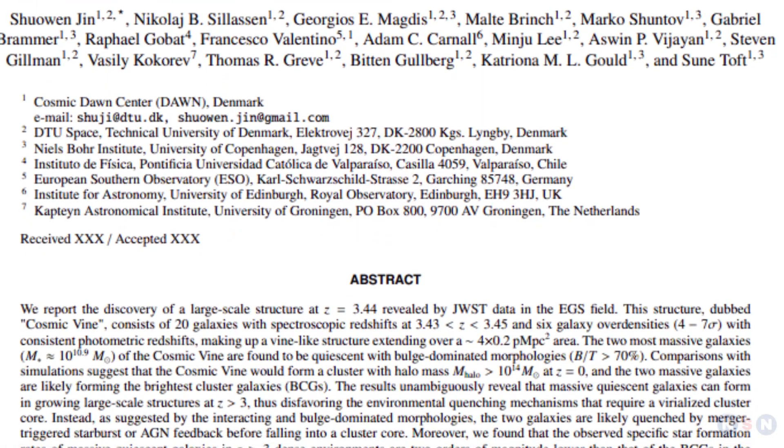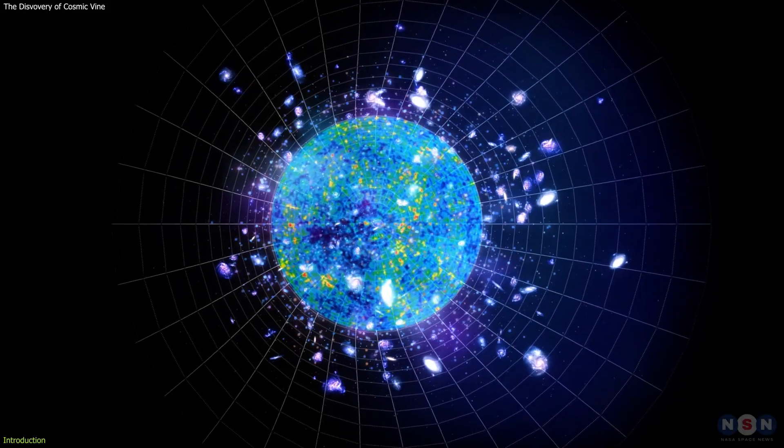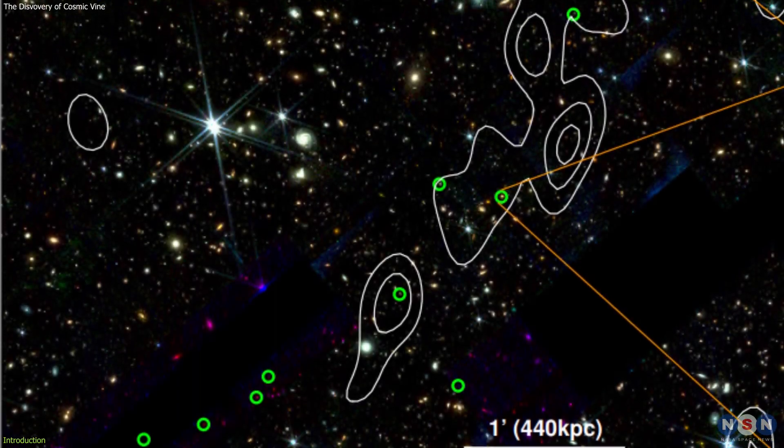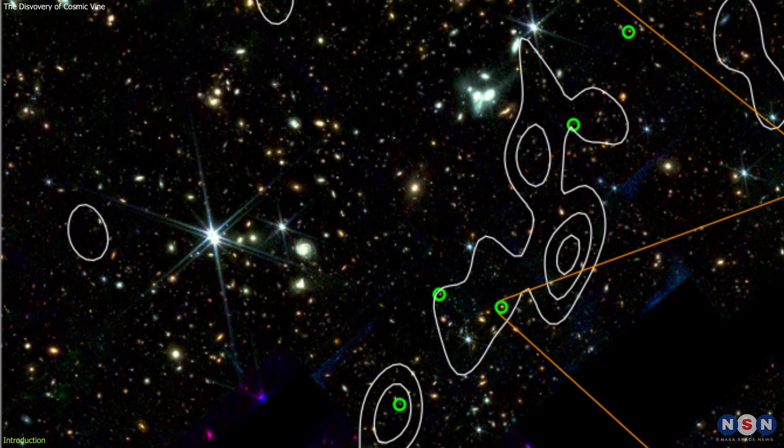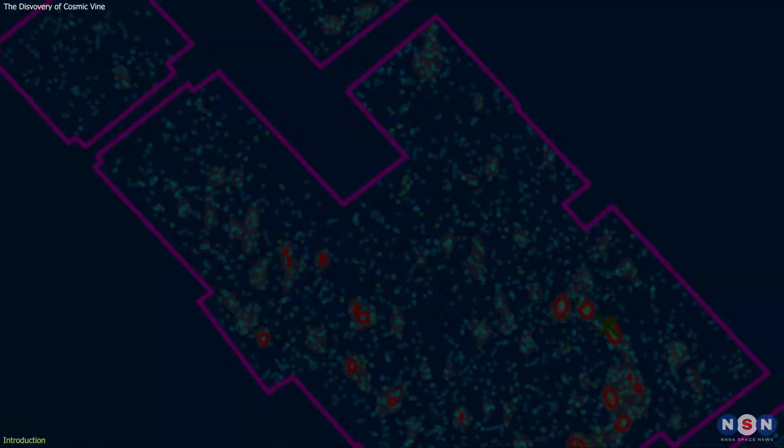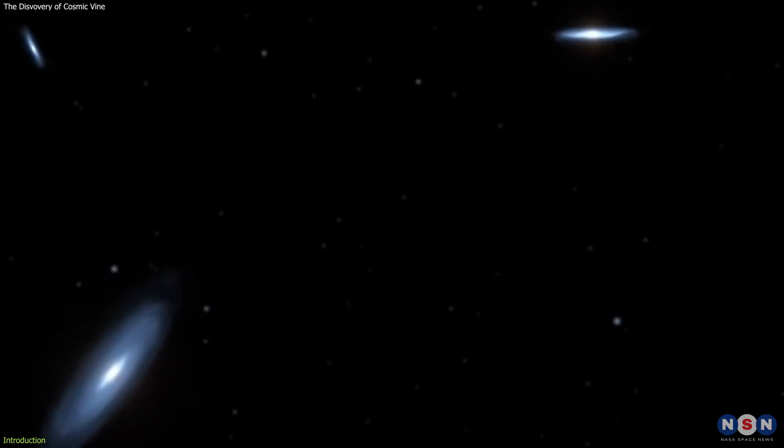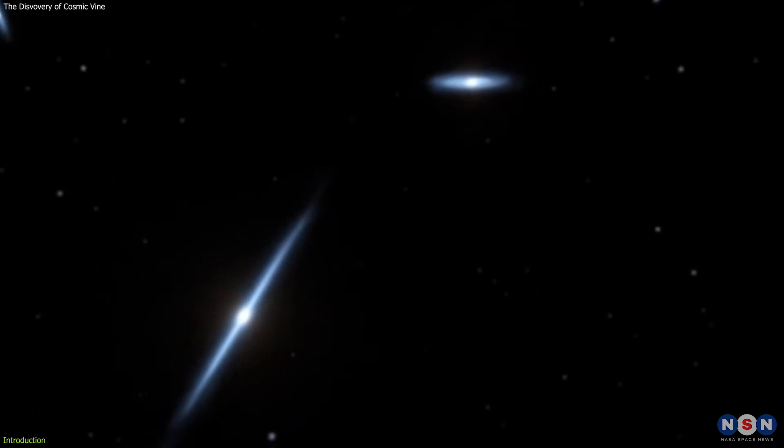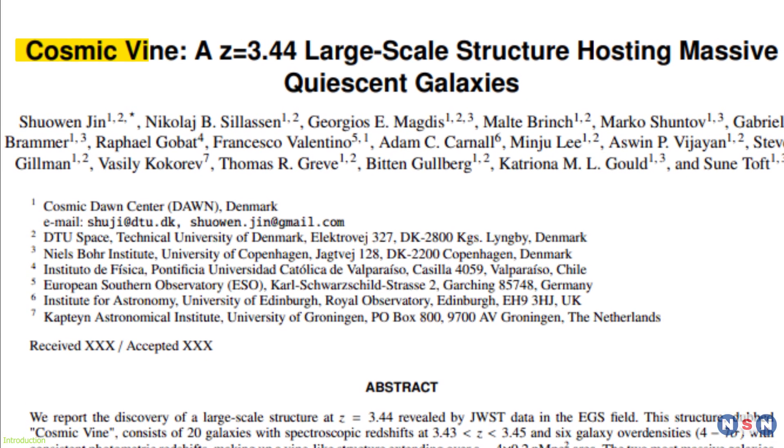Recently, astronomers have made a stunning discovery that could shed new light on the mysteries of the early universe. They have found a large-scale structure in the distant universe that stretches across the sky, connecting 20 ancient galaxies that are so far away that we see them as they were when the universe was only 1.5 billion years old, and they have named it the Cosmic Vine.